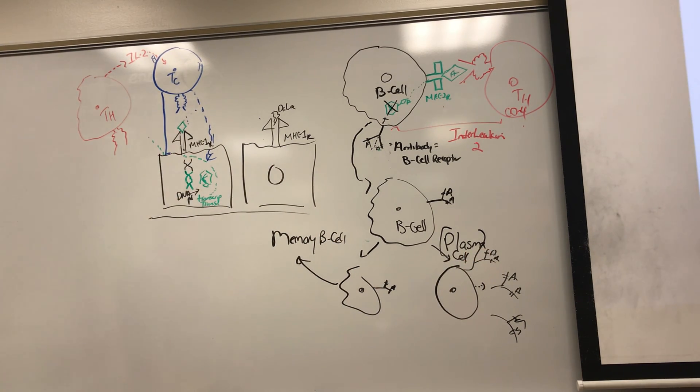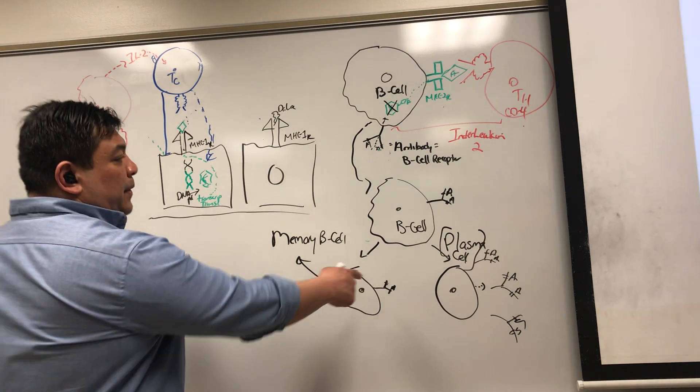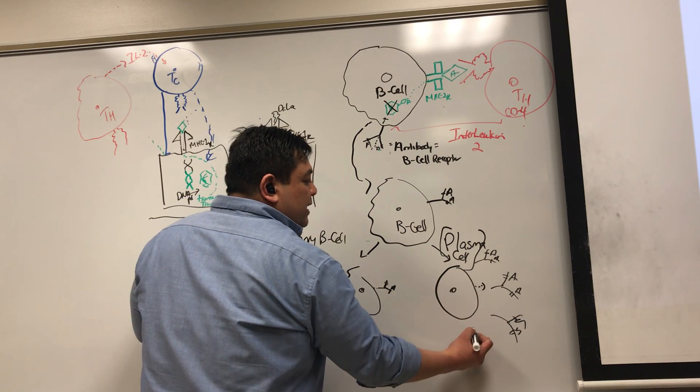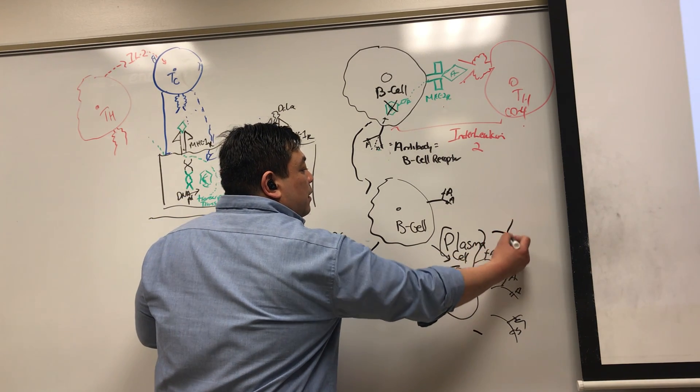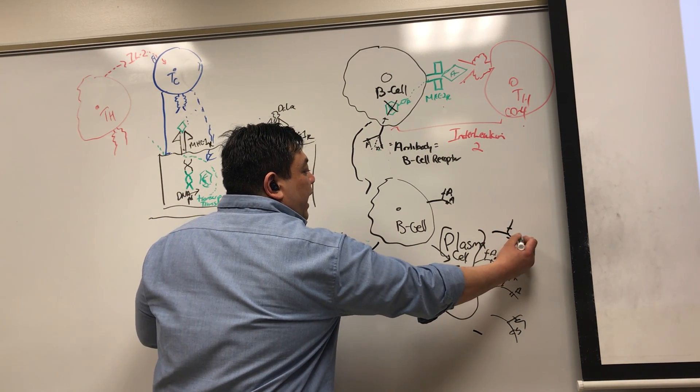So a plasma cell is actually the cell that produces antibodies. Sounds like a test question, right? Just because it's so specific. Plasma cells produce antibodies. They're activated versions of B-cells. The B-cells themselves are inactive. Once they turn into plasma cells, that's when they start producing antibodies. And the antibodies they produce are for the same epitope, all for epitope A.